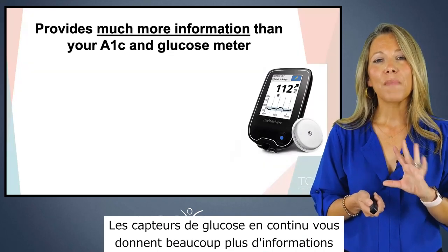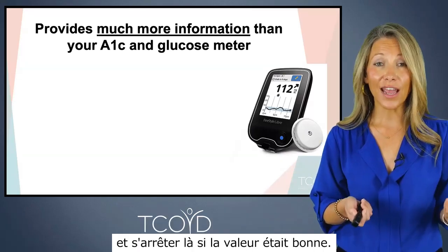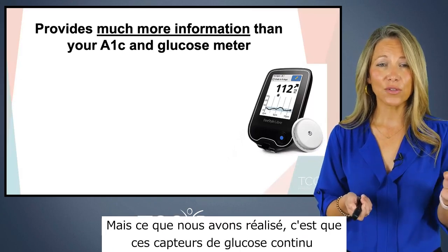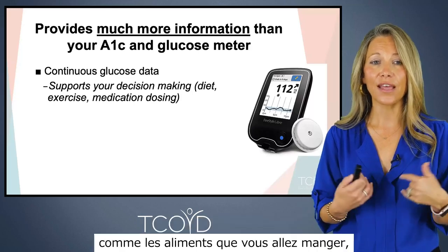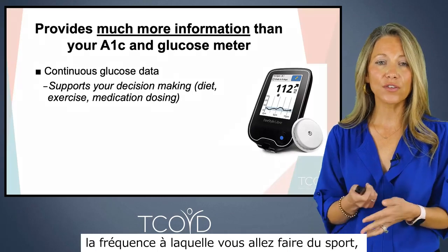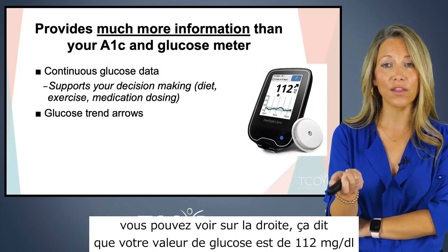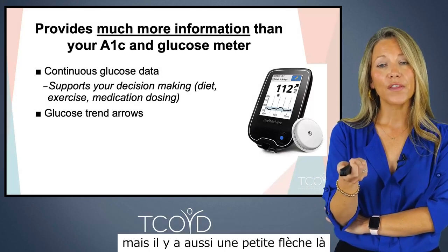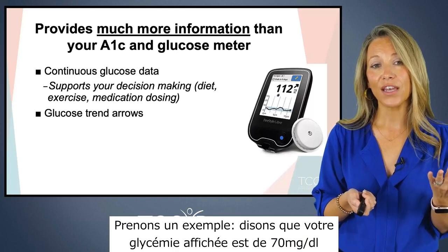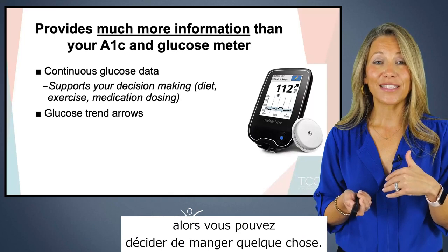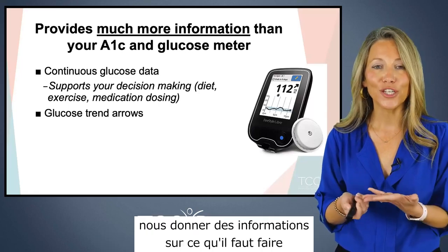Continuous glucose monitors give you much more information than your A1C or glucose meter. Back in the day, you'd get an A1C every three months and call it a day if it looked good. But CGMs give us data about what's happening all day long, allowing us to change decisions throughout the day — like what foods you're eating, how often you're exercising, or how you may dose your medication. CGMs also provide a trend arrow. For example, if you see on the Freestyle Libre that your glucose is 112 with an upward arrow, you know it's on its way up. If it's 70 and going down, you may eat something; if it's 70 and going up, you don't need to. Trend arrows give us crucial decision-making information.